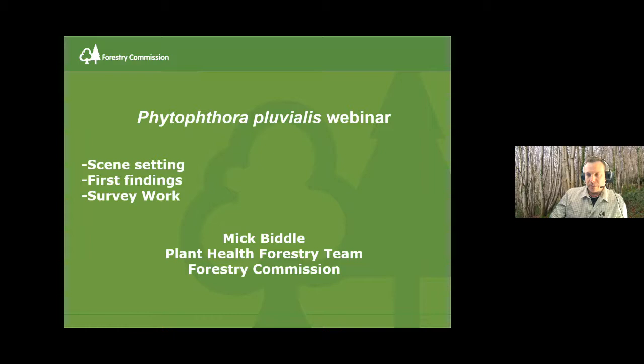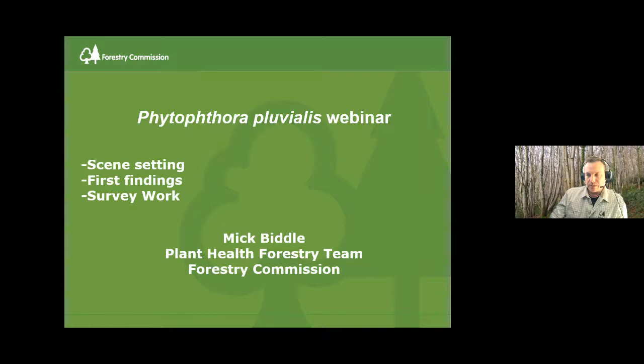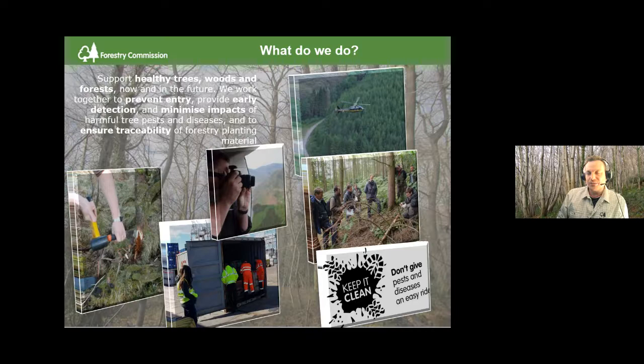I'll give you a brief overview of what the plant health forestry team does. Our team supports healthy trees, woods and forests. The three key areas we work on are: preventing the entry of pests and diseases in the first place; where they do get through, providing early detection through a lot of survey work so we're in the best possible position to detect things early; and minimizing their impact when they are found. This early detection and minimizing impact is very relevant to today's talk.